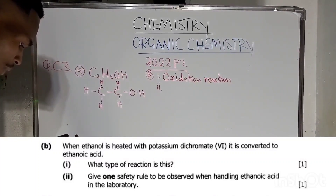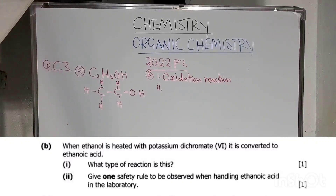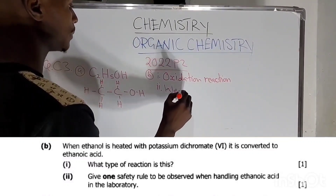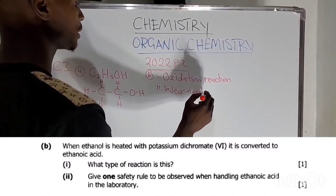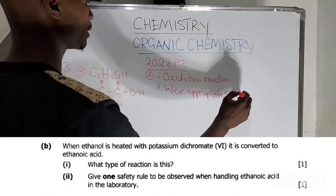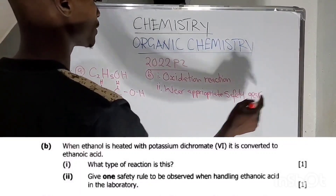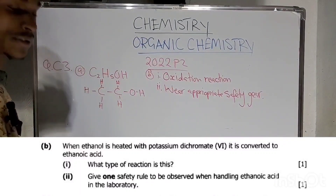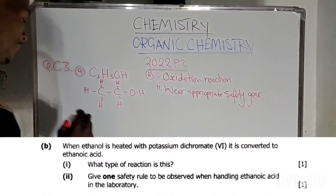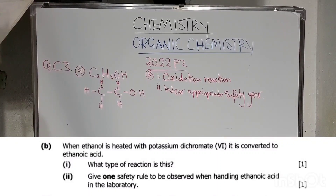Question B2: Give one safety rule to be observed when handling ethanoic acid in the lab. One safety rule is to wear appropriate safety gear — this includes gloves, goggles, and other protective equipment. That is the safety rule to observe when handling ethanoic acid in the lab.